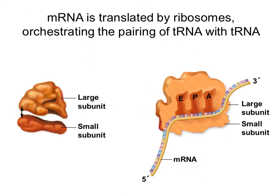To start translation, the ribosome — which is composed of a large subunit and a small subunit — finds the 5' end of the messenger RNA, binds to it, and then starts bringing in the transfer RNA into the interior of the ribosome. The ribosome has three main sites: the A site where the new tRNA enters, the P site where the peptide forms, and the exit site, which is where the tRNA goes once it has already transferred its amino acid and is ready to exit.